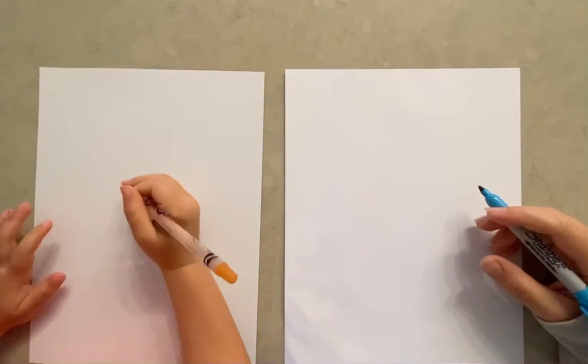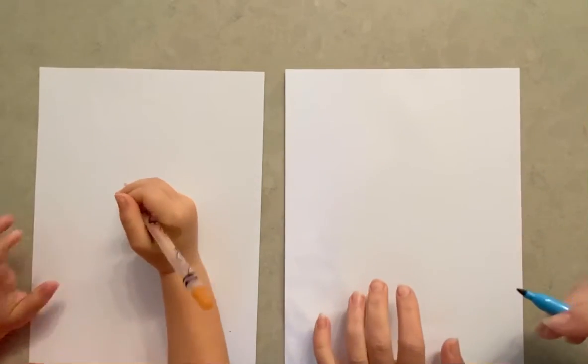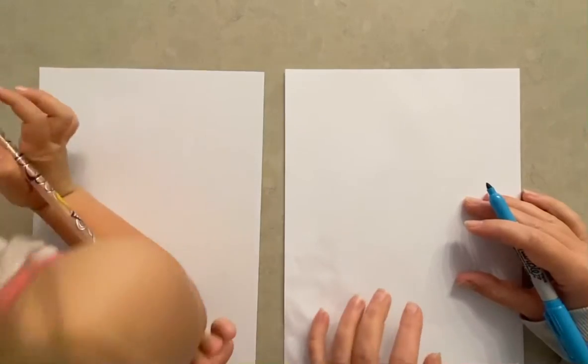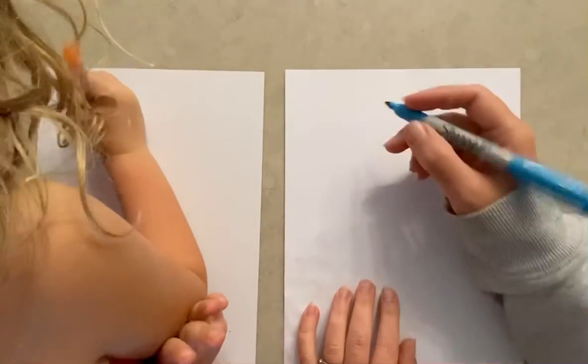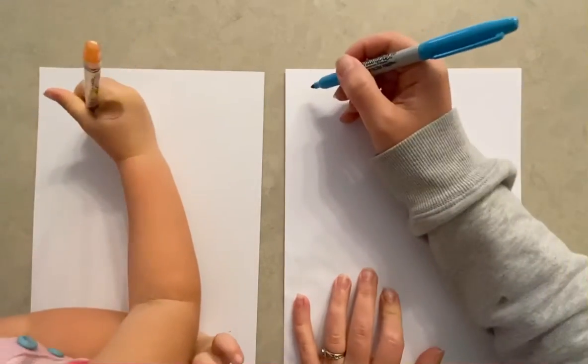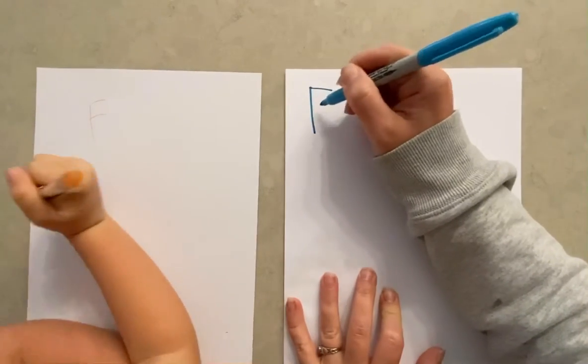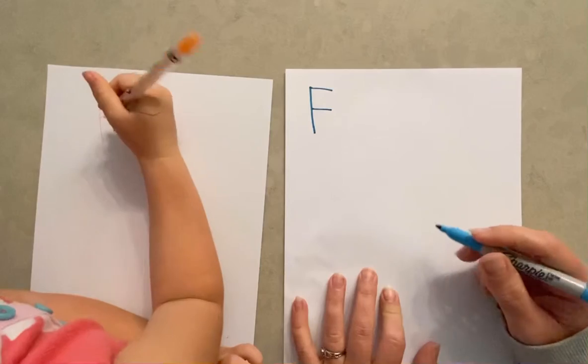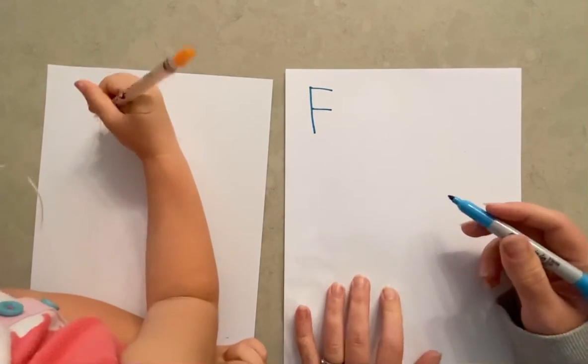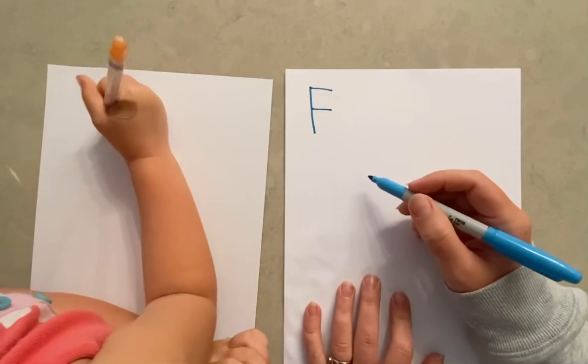All right, so first we said we were going to do a fox, so we're going to draw an F for fox. So how do we draw an F? Nice. All right, so F. Now fox, ready? I'm going to show you how.